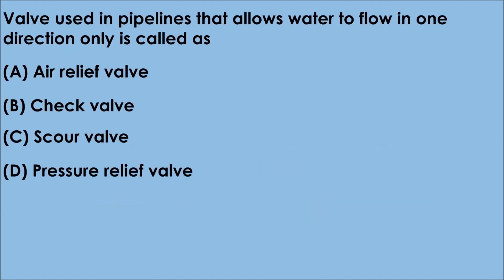Question 1. A valve used in pipelines that allows water to flow in one direction only is called: A. Air relief valve, B. Check valve, C. Scour valve, D. Pressure relief valve. The correct answer is option B — a valve used in pipelines that allows water to flow in one direction only is called a check valve.